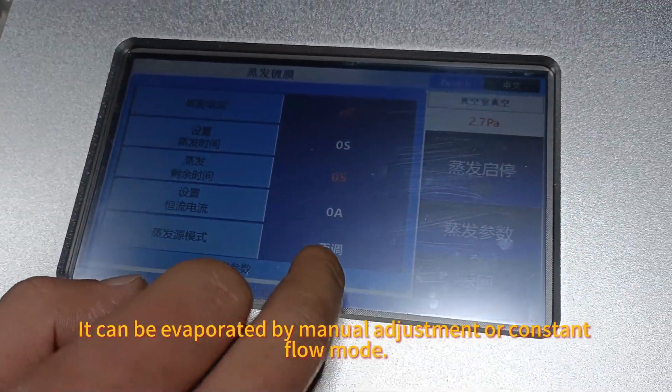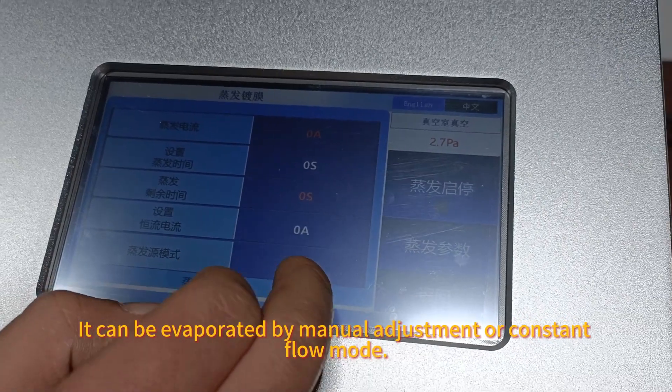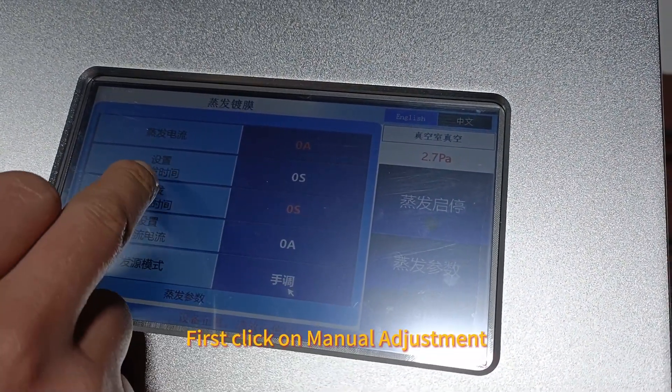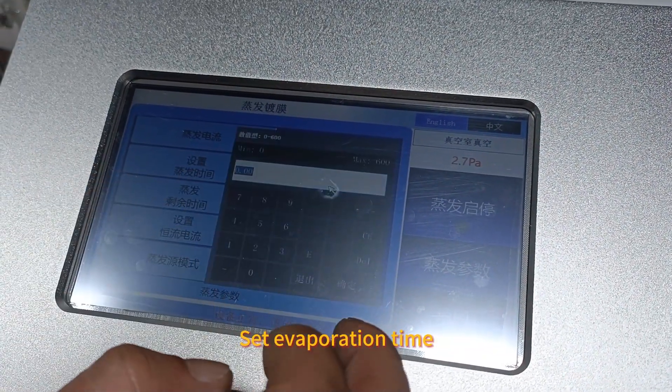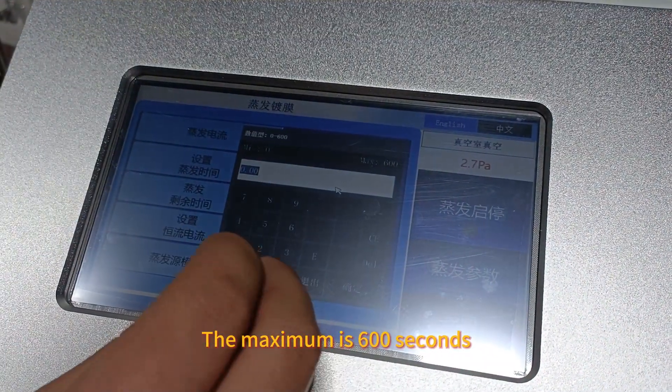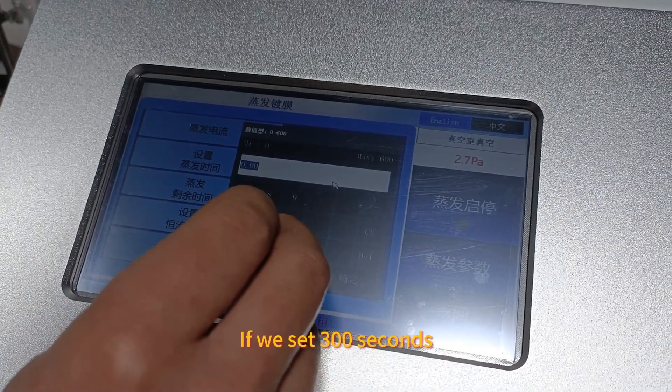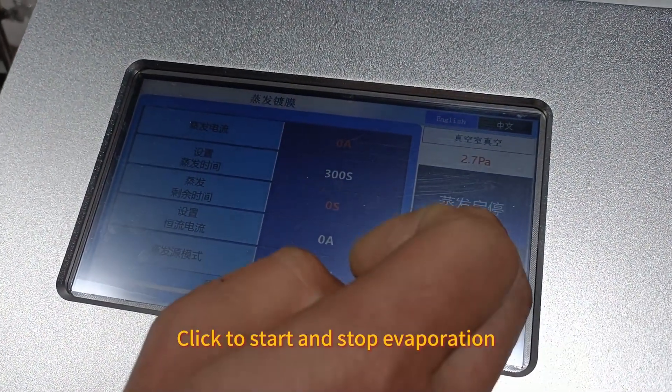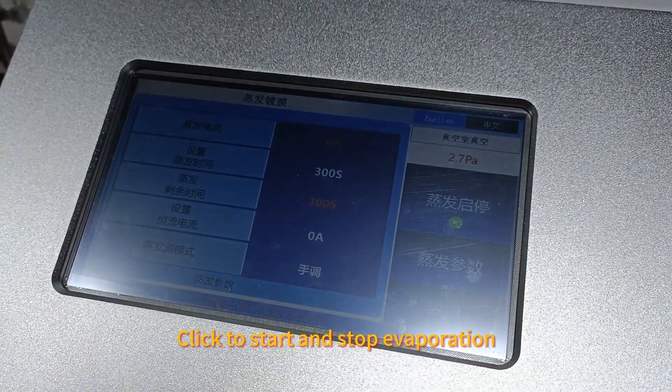It can be evaporated by manual adjustment or constant flow mode. First, click on manual adjustment and set the evaporation time. The maximum is low by seconds. Click to start and stop evaporation.